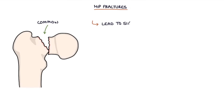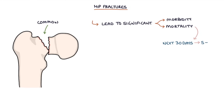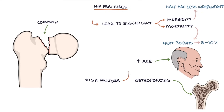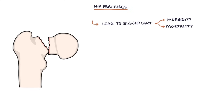Hip fractures are common and lead to significant morbidity and mortality. The 30-day mortality of a hip fracture is 5–10%, and half of patients become less independent after a hip fracture. Increasing age and osteoporosis are major risk factors, and females are affected more often than males. Due to the morbidity and mortality, hip fractures are generally prioritised on the trauma list with the aim to perform surgery within 48 hours.